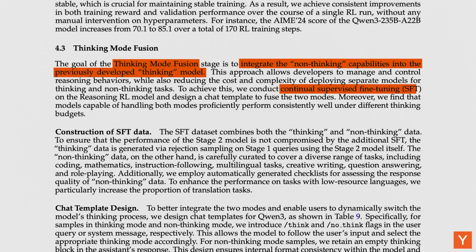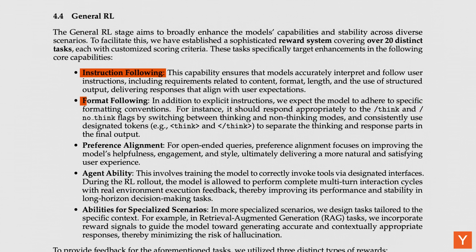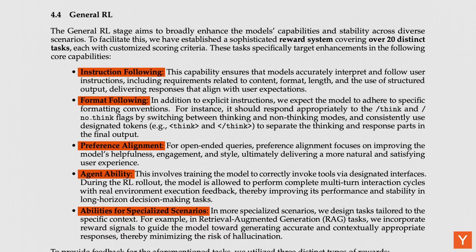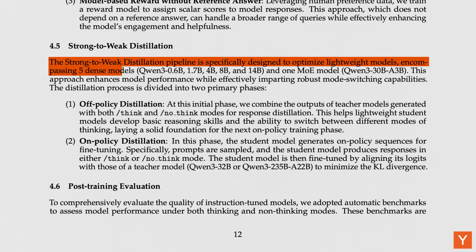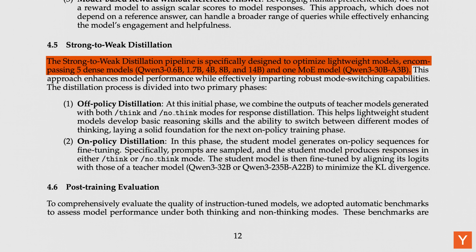Essentially, developers fine-tuned the model on a mix of thinking data (which includes intermediate reasoning steps) and non-thinking data (which omits them), then built a chat interface to let users toggle modes. Though this was unique to Qwen when the model first launched, GPT-5 now features a similar toggle. The final step, General RL, broadens capabilities in instruction following, formatting, preference alignment, tool use, and specialized scenarios. Qwen's developers then use strong-to-weak distillation, which allows for the training of smaller models from larger ones.